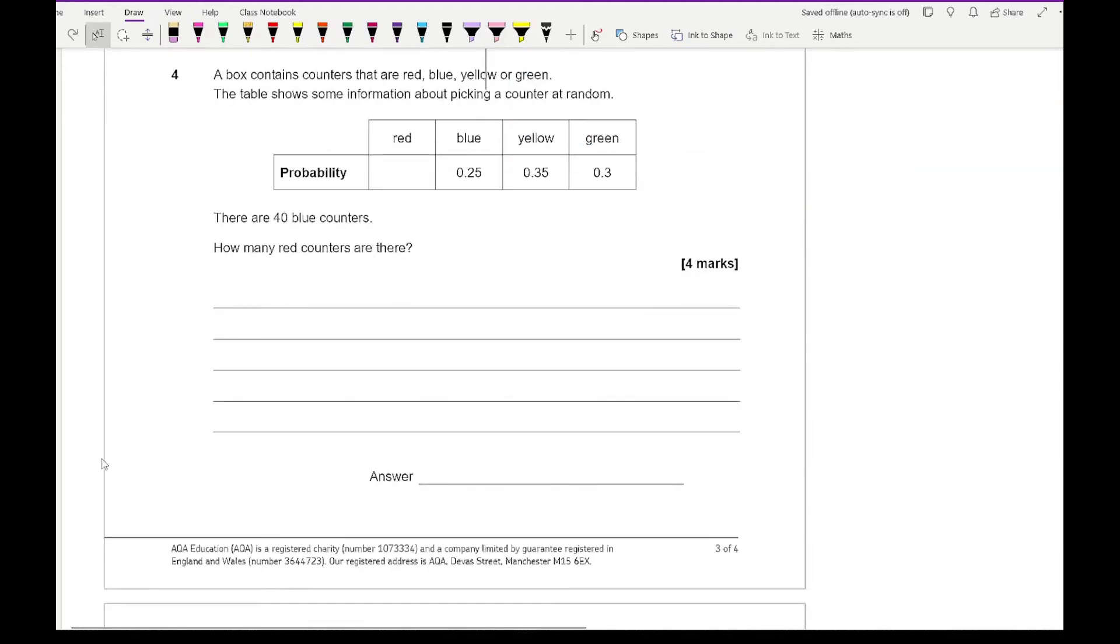Question 4 says that a box contains counters that are red, blue, yellow, or green. The table shows some information about picking a counter at random. There are 40 counters. How many red counters are there? Well, to start off with, what we need to do is complete this probability table, by recognising that all of those probabilities need to add up to 1. So what we've got is 0.25, 0.35, and 0.3. And if I just quickly add them all up, what I end up with is 0.9. So the probability of being red is going to be 0.1.